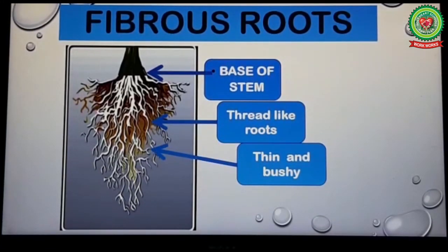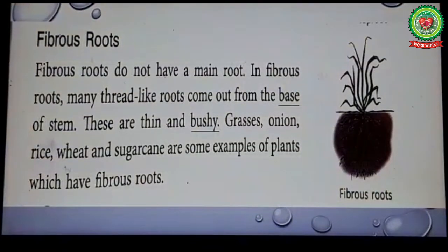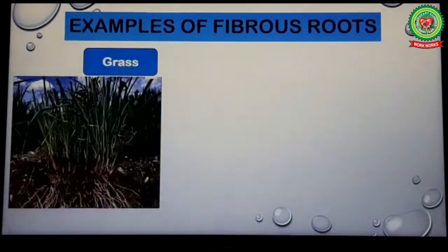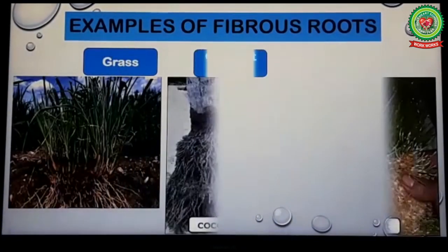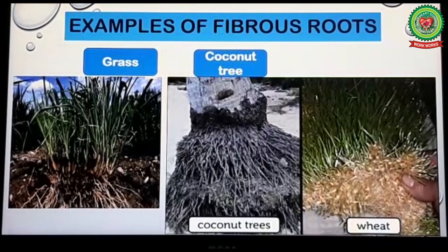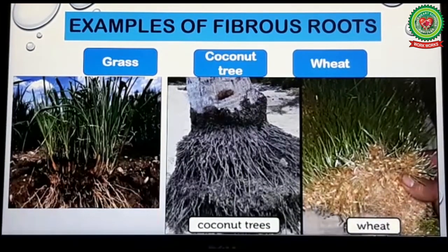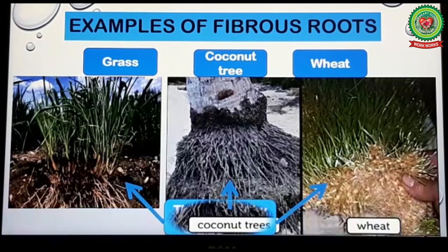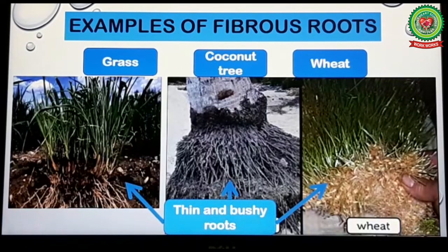Grasses, onion, rice, wheat, and sugar cane are some examples of plants which have fibrous roots. Some plants like grass, coconut tree, and wheat do not have a main root. They have a bunch of small roots that are thin and bushy in appearance.